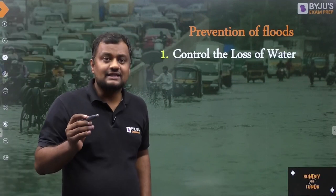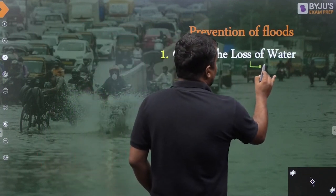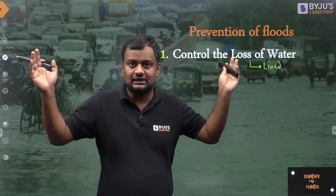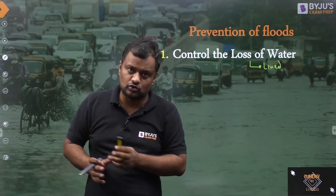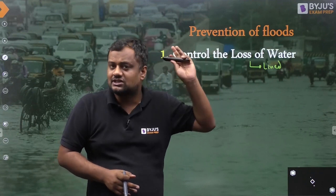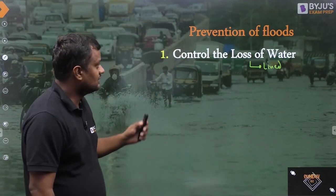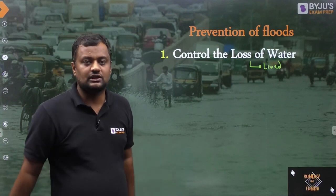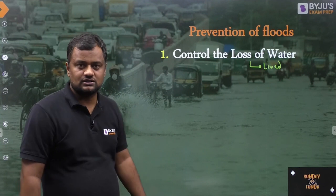Let me tell you some solutions. First, control the loss of water. If a canal is there, we can make it a lined canal. Sometimes even without huge rainfall or water discharged from the dam, the slopes of an unlined canal break down, causing water to reach the fields. So we need to provide lining, check the levels of the canal, and take a higher factor of safety especially in newly constructed canals.